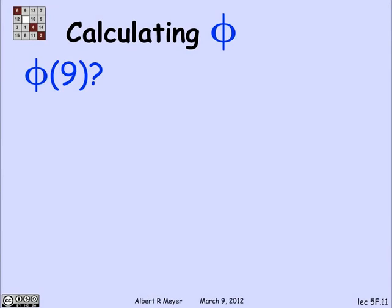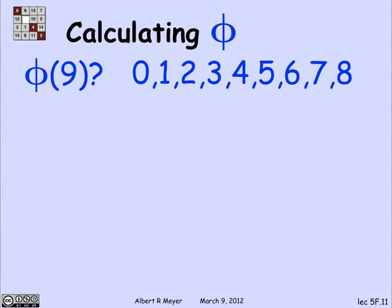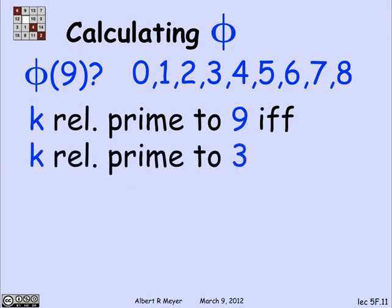Let's look at a more important or illustrative example, namely phi of 9. So there are the candidate numbers from 0 through 8. And which ones are relatively prime to 9? Well, it's relatively prime to 9 if and only if it's relatively prime to 3.